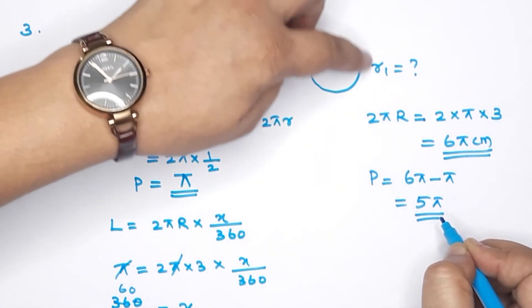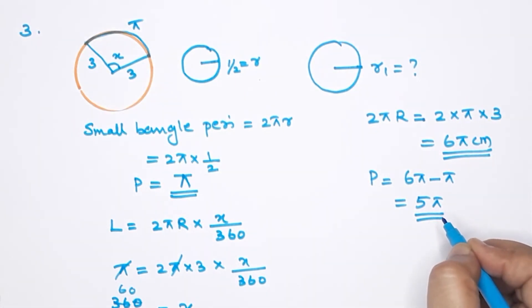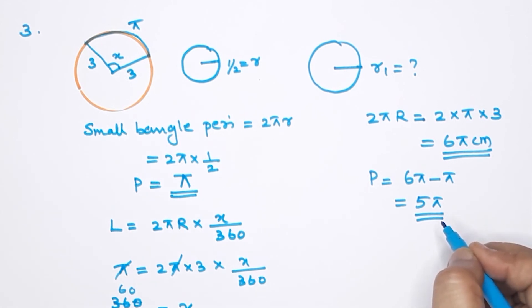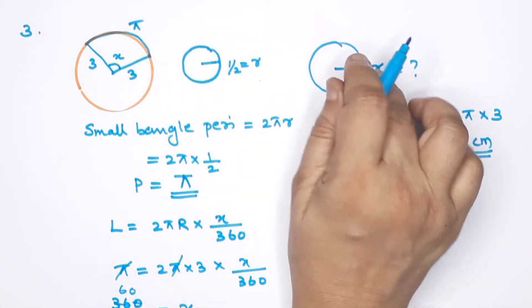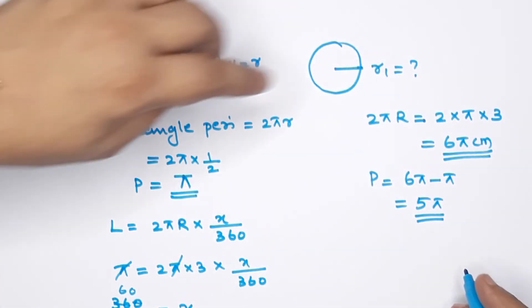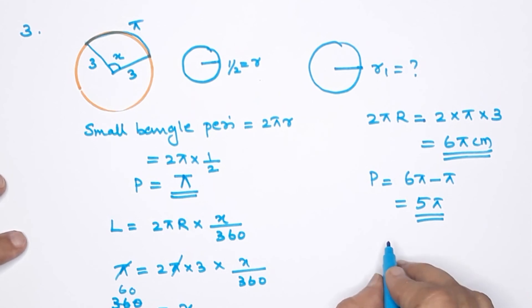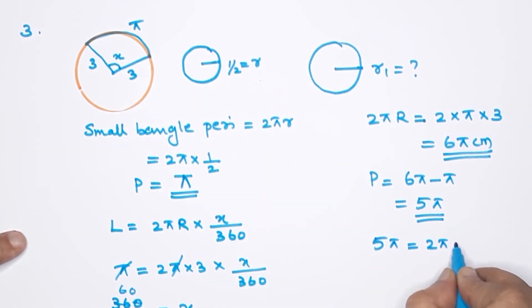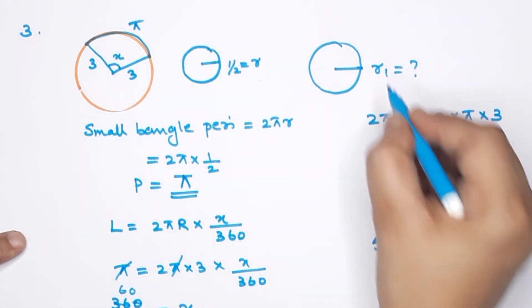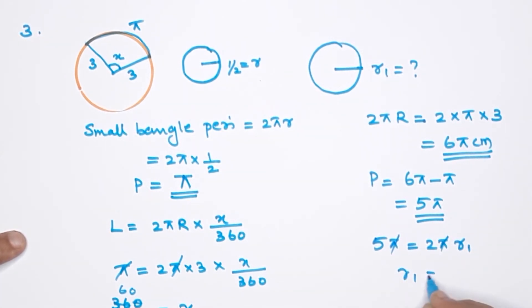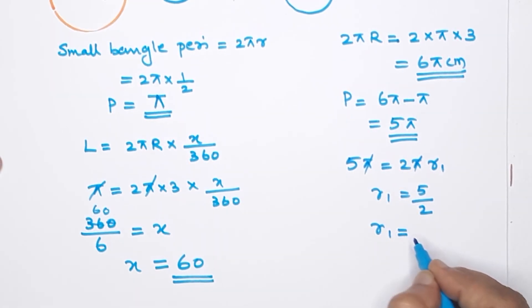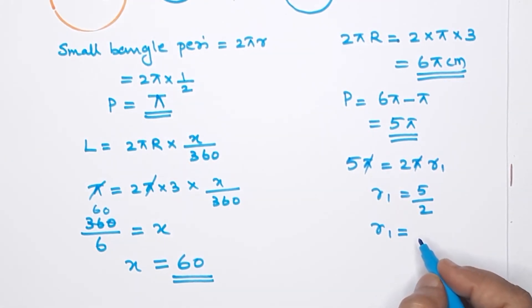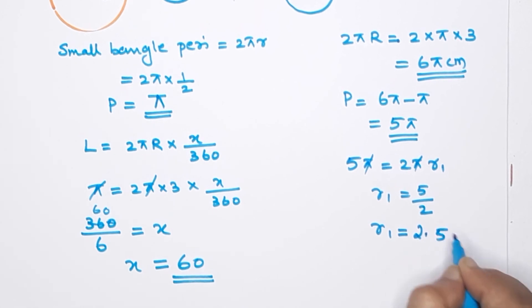This 5π is the full perimeter of the new smaller bangle. So 2πr₁ = 5π. Canceling π: 2r₁ = 5, therefore r₁ = 5/2 = 2.5 centimeters.